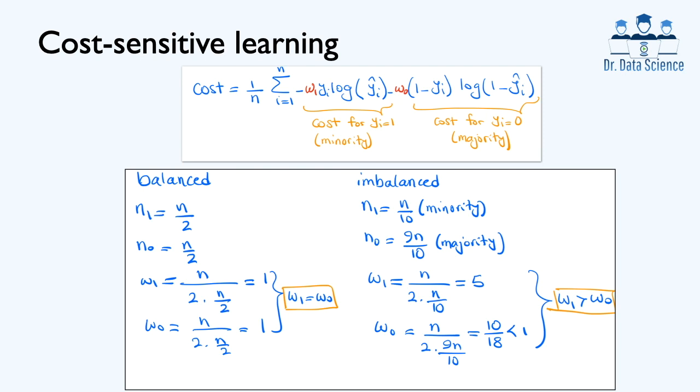In this case, we have n1 equals to n0 and they each contain half of the total number of data points. So that's why we have n over 2 for both number of samples in class 1 and class 0. If we plug in these two values into the equation that we had before, then for w1, we find n over 2 times n over 2. And if we cancel terms here, we see that w1 is equal to 1. And similarly, w0 is also equal to 1, which means that here w1 and w0 are identical, which means that we are putting the same weight or the same penalty for making mistakes in terms of false positive and false negative.